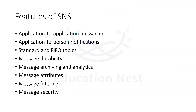The features of SNS include application-to-application messaging. It supports subscribers such as Amazon Kinesis Firehose delivery streams, Lambda functions, SQS queues, and any HTTP endpoints. So application-to-application, or service-to-service messaging, is also possible with SNS — it is not just application to person.